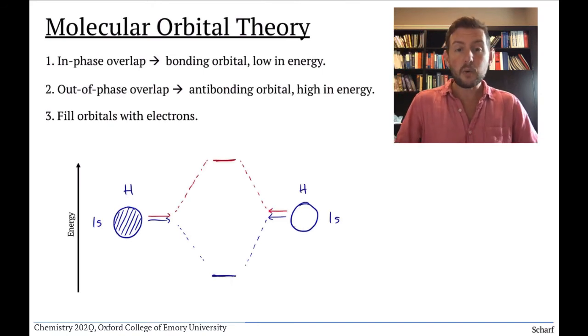The bonding orbital is low in energy, and the antibonding orbital is high in energy. Since each hydrogen had one valence electron to begin with, we populate the molecular orbitals with two total electrons, starting with the lowest energy orbital first.